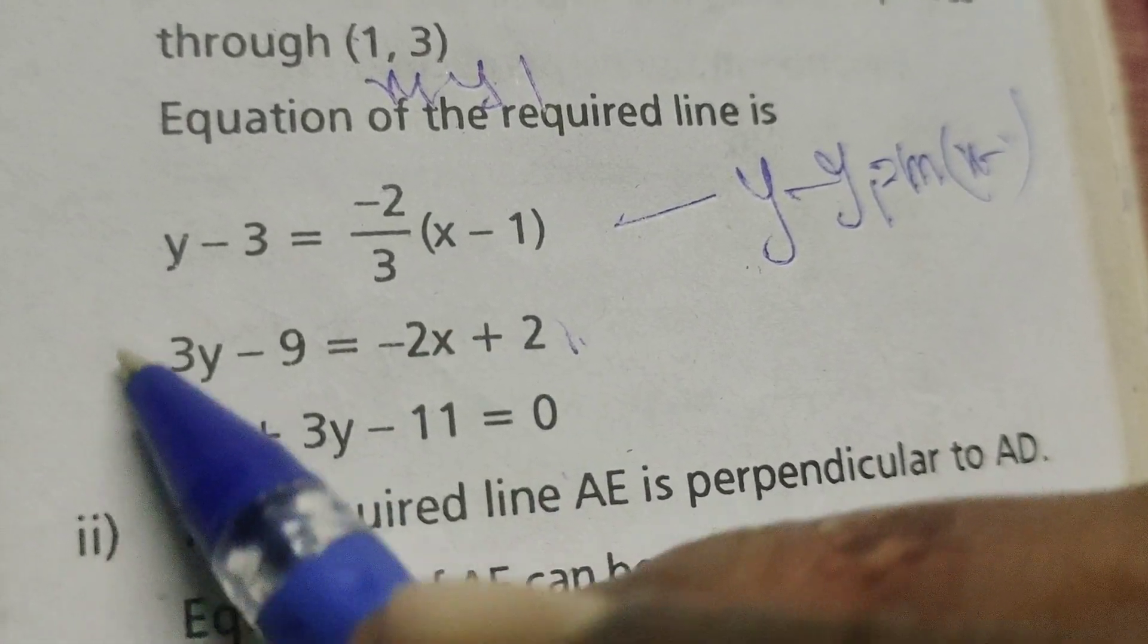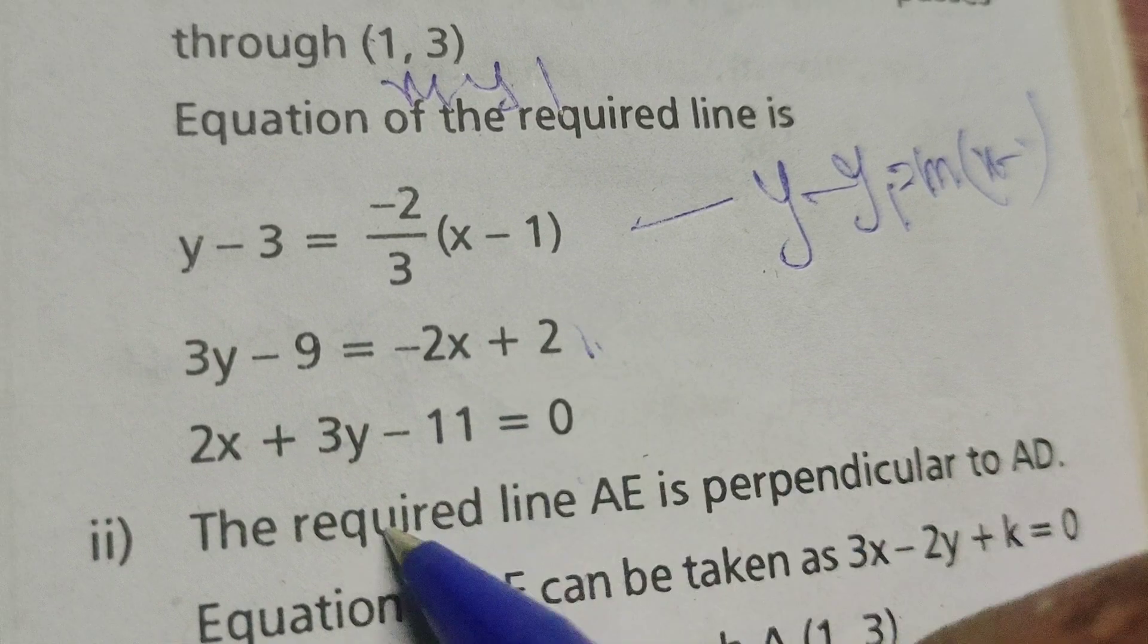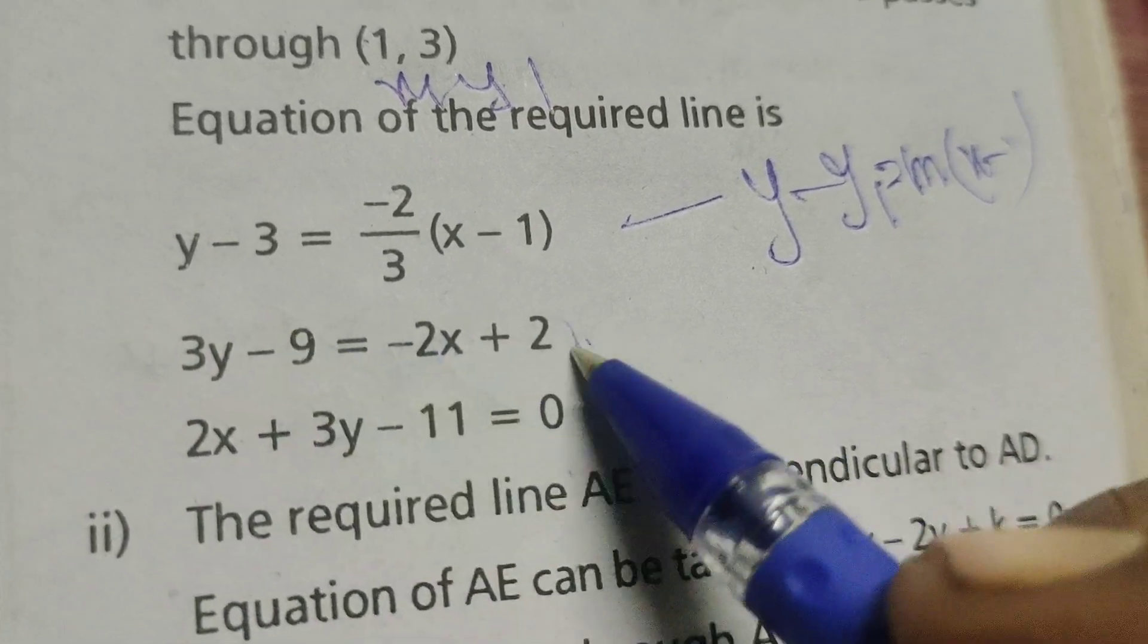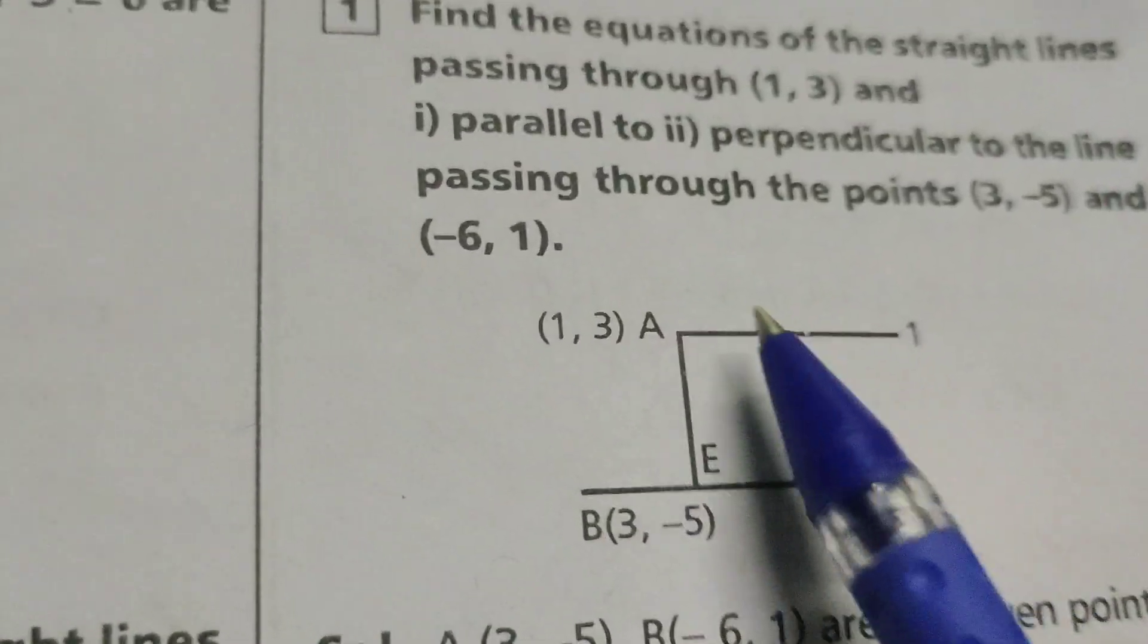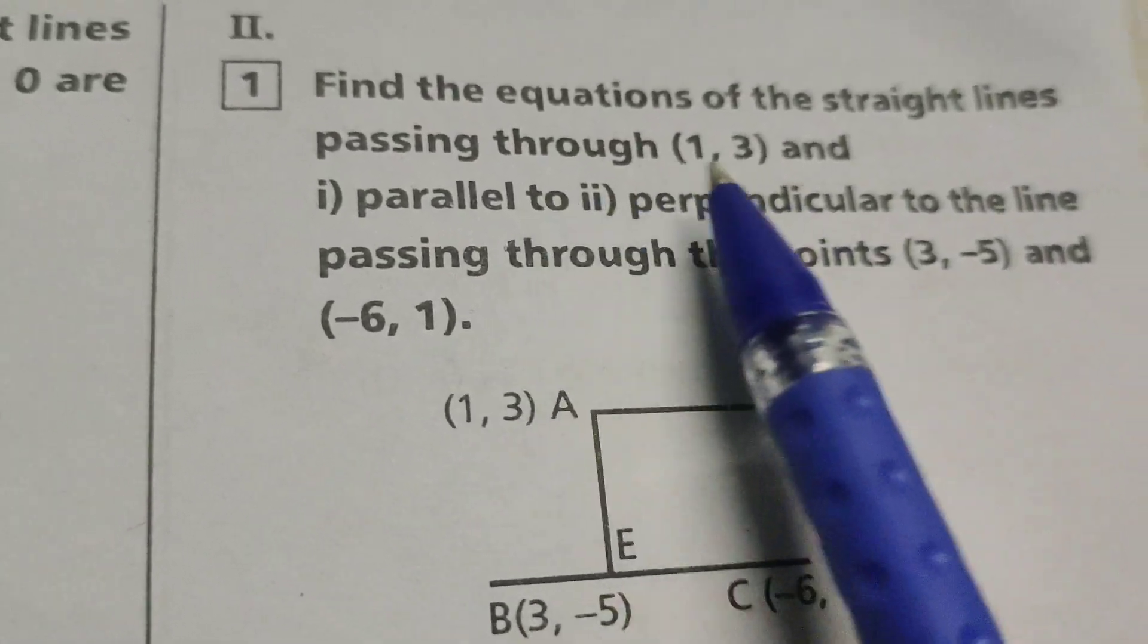2x plus 3y minus 9 minus 2, this minus 11 equals to 0. Now find out the given passing through the point.